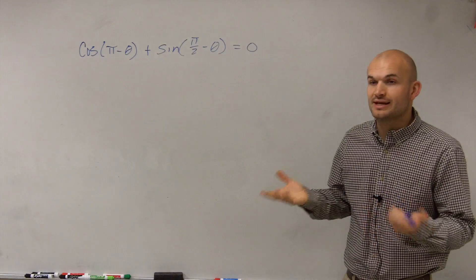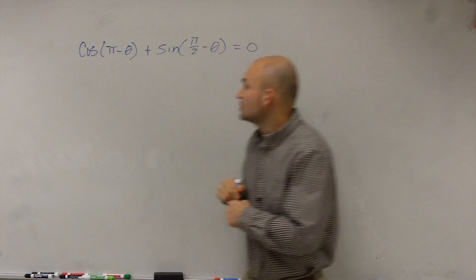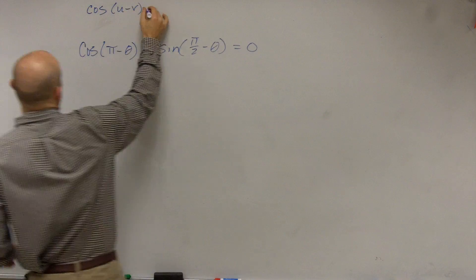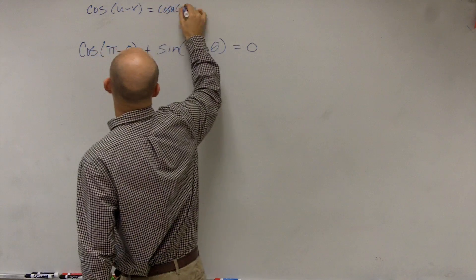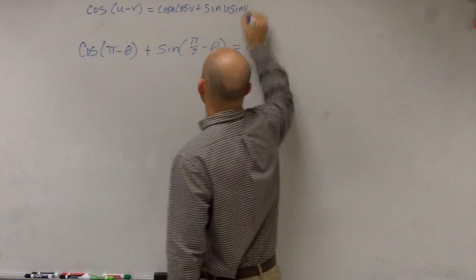And what I want to do then is by using the sum of difference angles, I have to use both of these formulas. So let's go and review what the cosine of u minus v is. That's equal to the cosine of u times the cosine of v plus the sine of u times the sine of v.